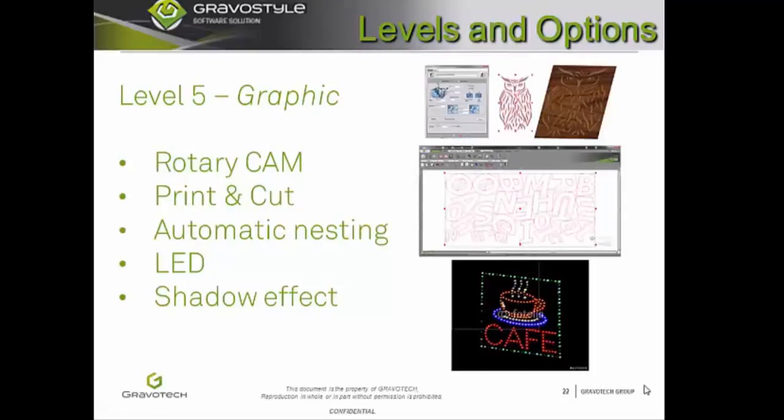The fifth level of Gravastyle is Graphic. This level is ideal for photograph engraving, model making, cutting printed media, and more. The Rotary Cam is a feature that creates optimized vector engraving paths giving you more precision and speed — you can see a preview on the first image to your right. Print and Cut is a feature that allows you to cut printed media in four steps: simply create your image, print, locate the registration marks with the red laser pointer, and cut. Automatic Nesting optimizes the position of the elements to be engraved so that the least amount of material is used, saving you money — you can see an example of this on the middle image to your right. The LED function automatically positions drilling points along the contour to create illuminated signs, such as the last image on your screen.